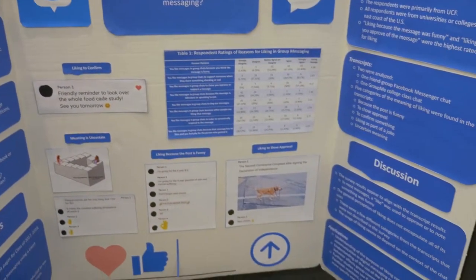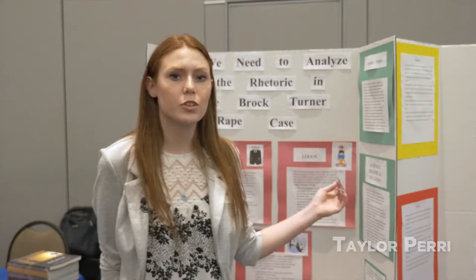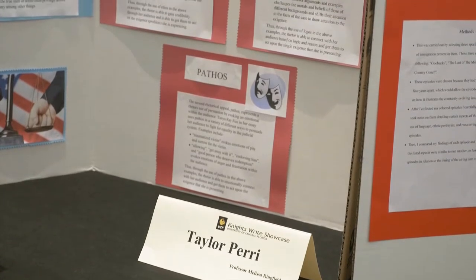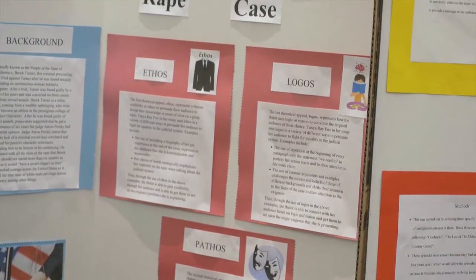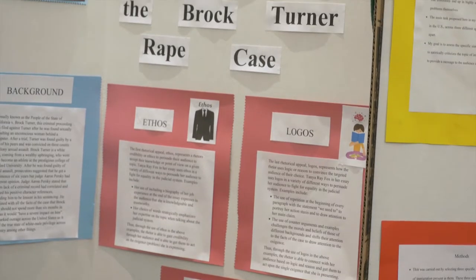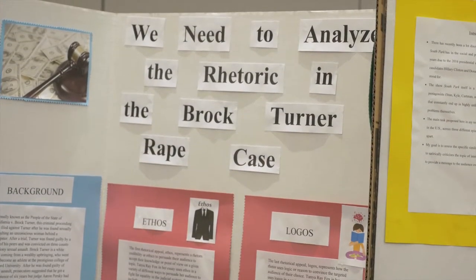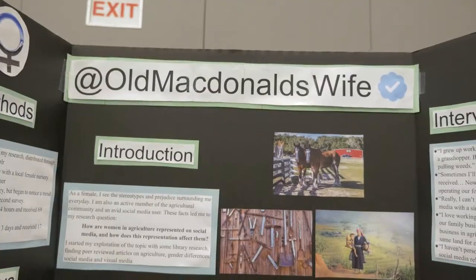My project was assigned to ENC 1101 and it is on the Rotterner Rape case and how the writer Tanya Ray Ross was able to use her sports career website as a way to make change in her discourse community. She was able to bring up the topics of social injustice, bias, and white supremacy, and was able to convince her audience that no matter who you are, it is wrong to commit a crime and that you should be punished for the crime that you commit.